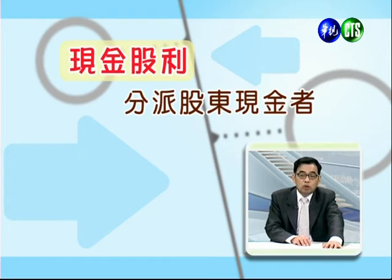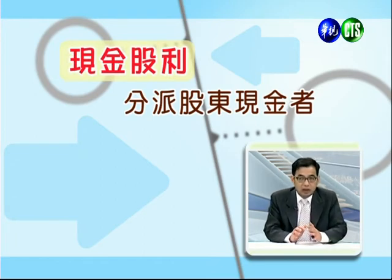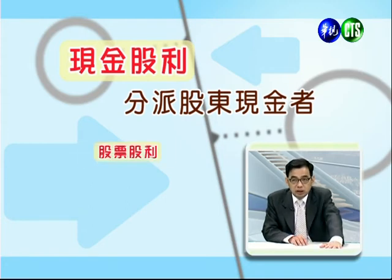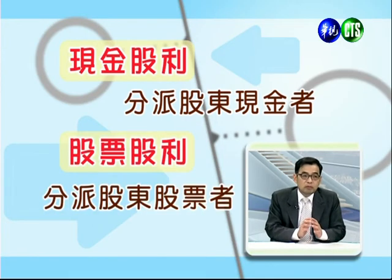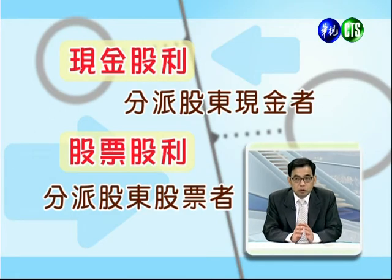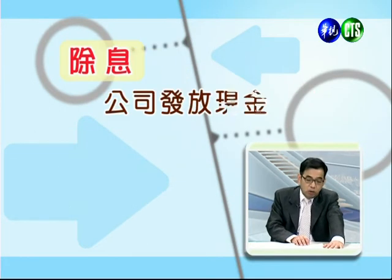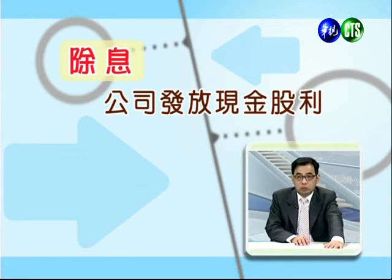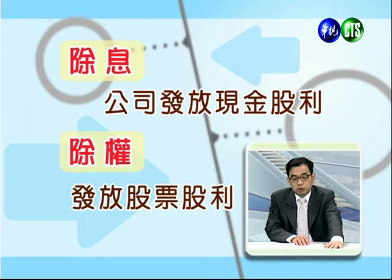股票股利的增资来源有两种：一种叫盈余转增资，另一种叫资本公积转增资。有关除息跟除权的意义：如果公司发放给股东的是现金，称为现金股利，发放时称为除息；如果公司分配给股东的是股票，称为股票股利，发放时称为除权。